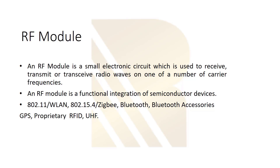An RF module is a functional integration of semiconductor devices, so we expect lots of blocks and devices inside our RF module. Examples of these kinds of modules include 802.11 WLAN, Zigbee, and Bluetooth.